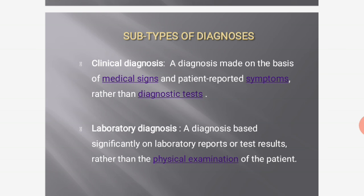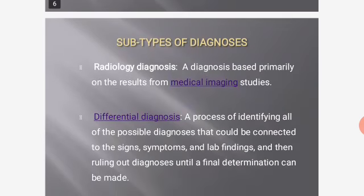Laboratory diagnosis is based significantly on laboratory reports or test results rather than physical examination. Radiology diagnosis is based primarily on results from medical imaging studies. Differential diagnosis is the process of identifying all possible diagnoses connected to the signs, symptoms, and lab findings, then ruling out diagnoses until a final determination can be made.